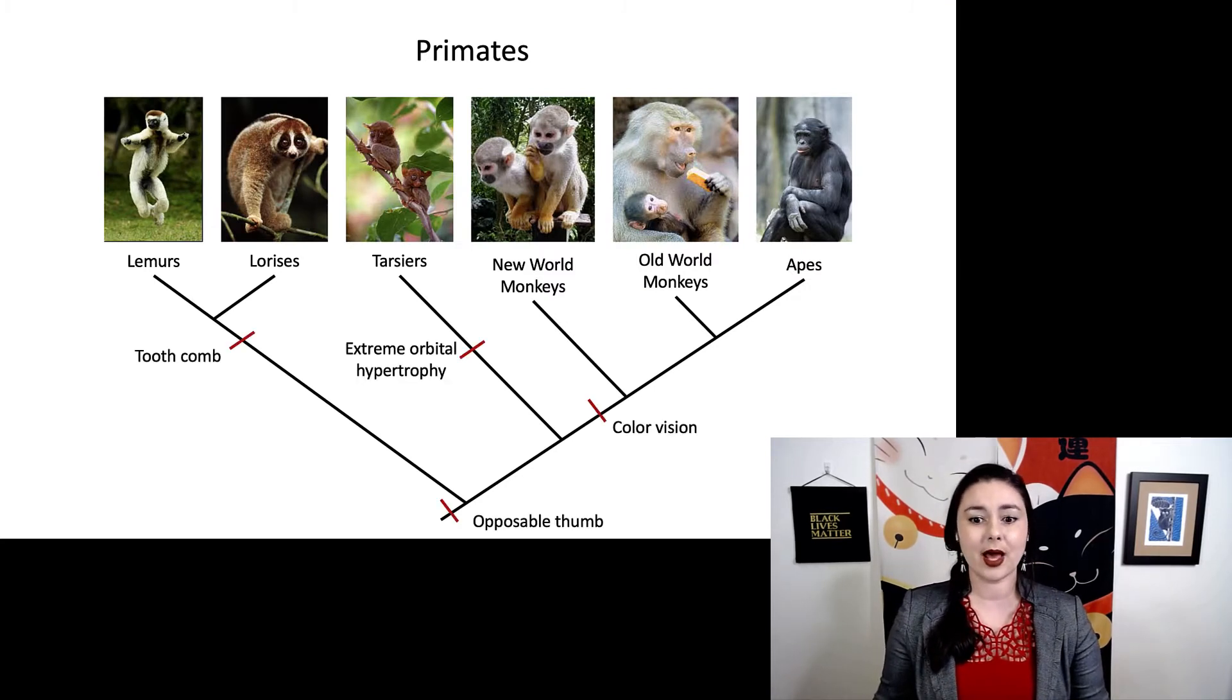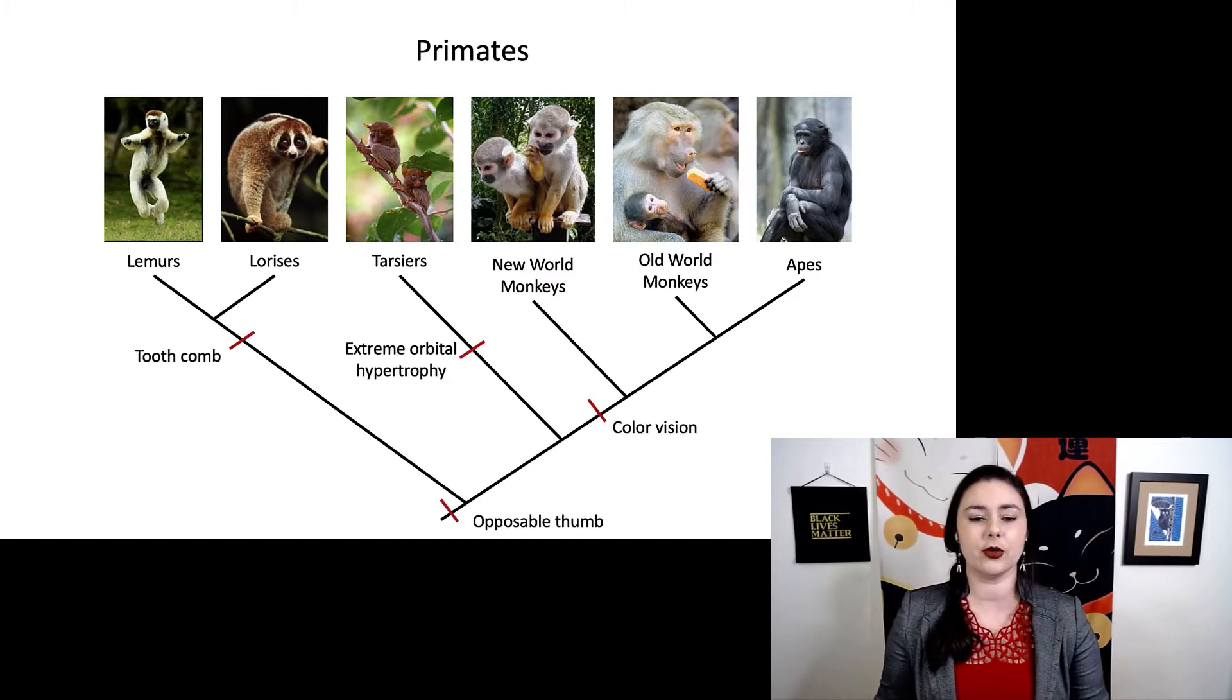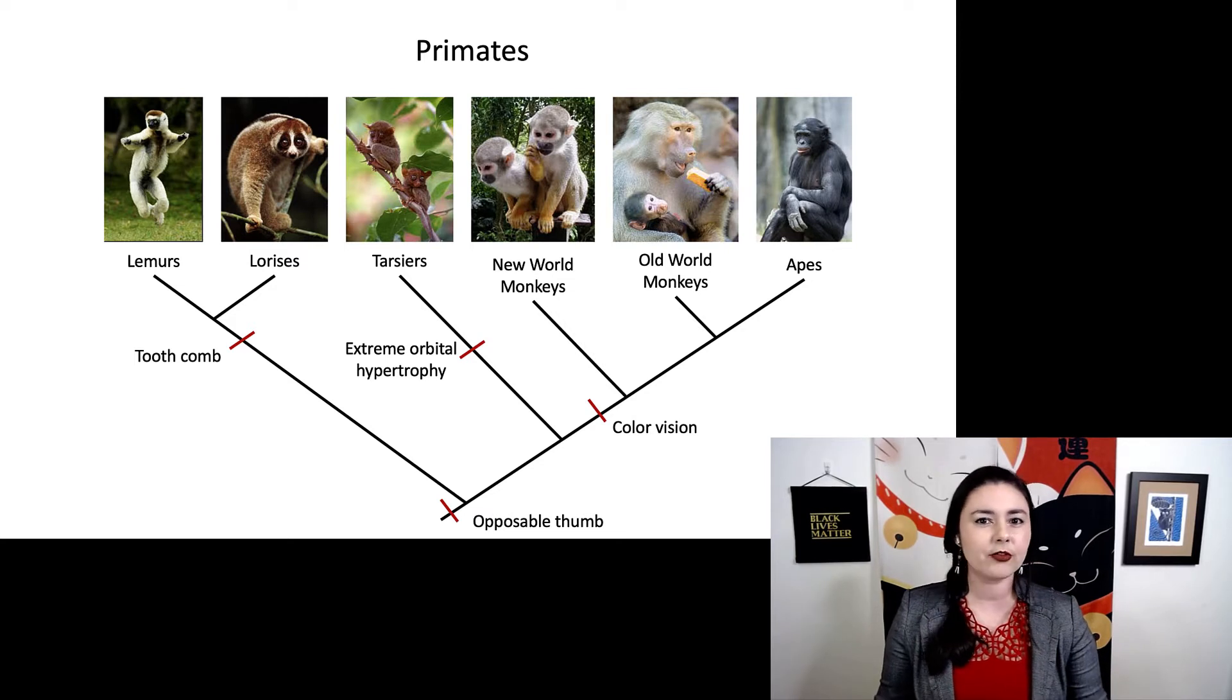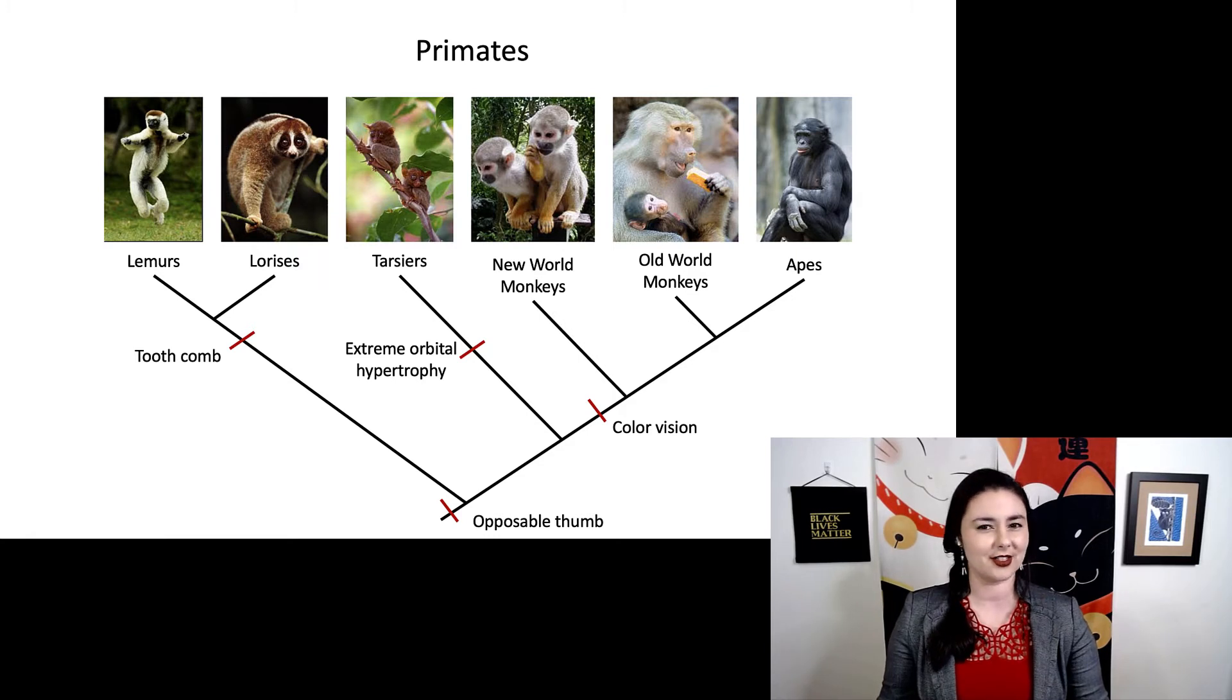So let's go back to our primate tree here. And we can map several different traits on this tree. So we have a tooth comb in our lemurs and lorises. Tarsiers have extreme orbital hypertrophy. All of our anthropoids or most of our anthropoids have color vision. And we have an opposable thumb. So can you tell what types of traits are each of these? Synapomorphies, autapomorphies, and plesiomorphies? Take a moment and see if you can figure it out for yourself.